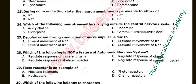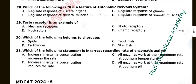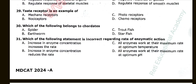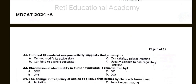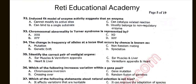Question number twenty-nine: Taste receptor is an example of. The correct answer is D: Chemoreceptors. Question number thirty: Which of the following belongs to Chordates? The correct option is C: Trout fish. Question number thirty-one: Which of the following statements is incorrect regarding rate of enzymatic action? The correct option is B: Increase in enzyme concentration reduces the rate. Question number thirty-two: Induced fit model of enzyme activity suggests that enzyme. Option C is correct: Can catalyze related reactions.